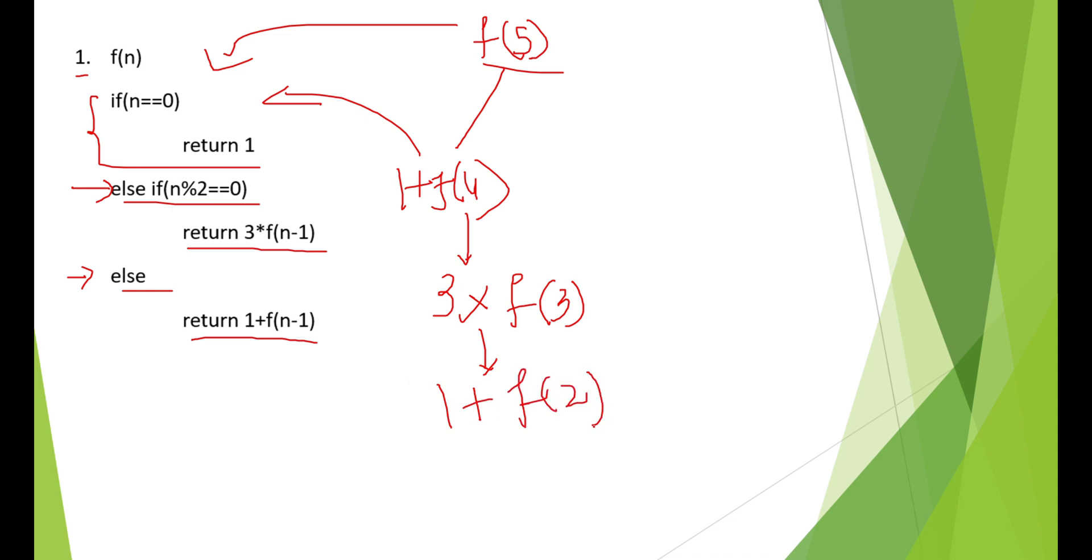Then again, 3 into f of 1. And then finally, since 1 is odd, we will get 1 plus f of 0.